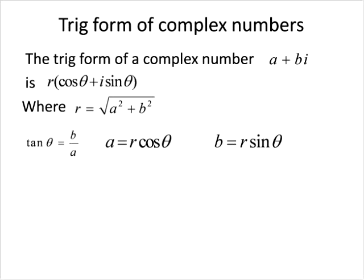We're going to talk about the trig form of complex numbers. What you'll notice in this section is that there are a whole lot of formulas. We'll try to simplify a few of those down. If you happen to have a complex number — the regular A plus Bi kind of thing — we're going to rewrite those into trig form, which is R times cosine theta plus I sine theta. R squared equals A squared plus B squared, and tangent of theta equals B over A. A is our R cosine theta and B is our R sine theta.